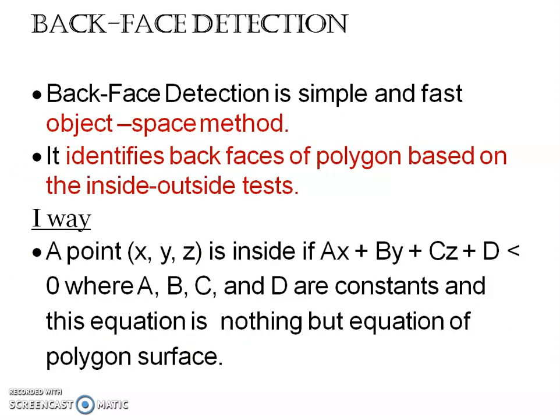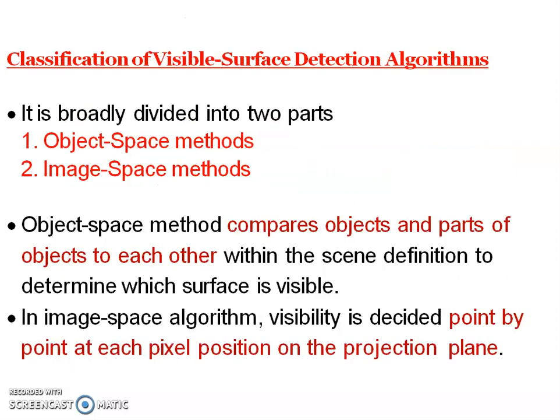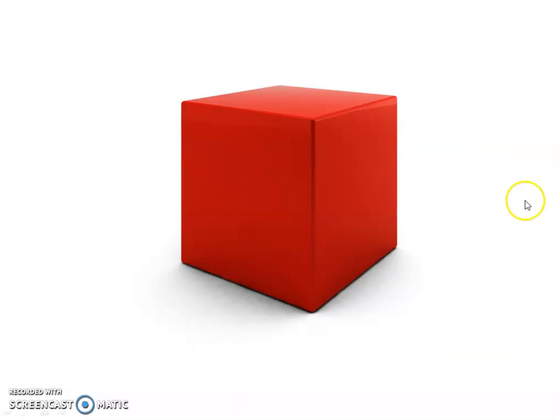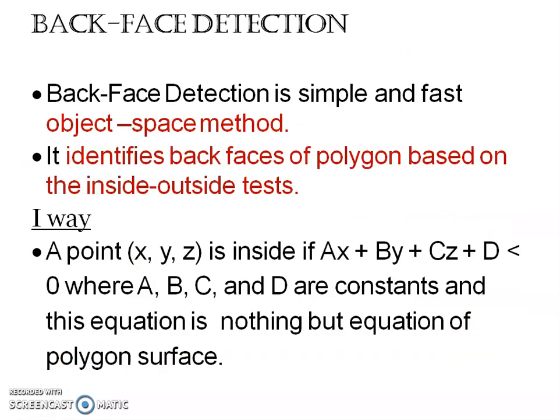This is back-face detection. This back face area contributes half of the total number of surfaces and is already storing in the memory. To save processing time, we can remove this back-face part, which we are not able to see. To identify the back faces of a polyhedron, you can use inside-outside test. There are two ways.